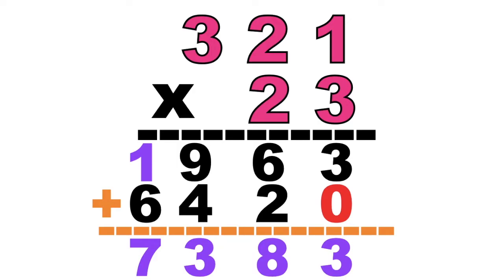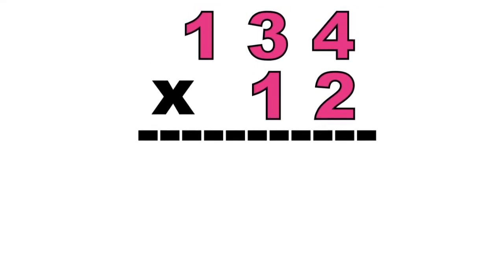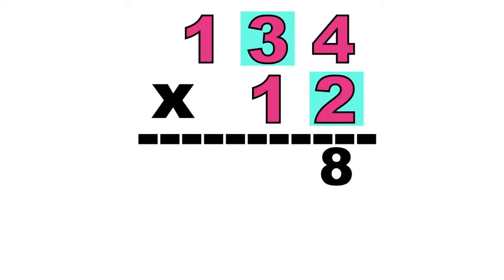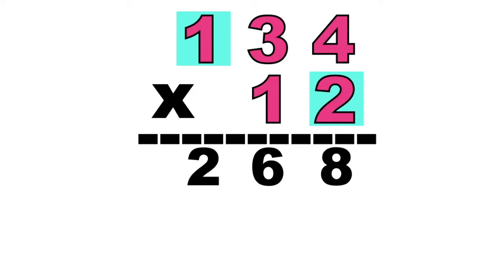Let's proceed to the next number. So let's multiply digit 2 on each digit at the first factor. 2 times 4 equals? Good job, children. It's 8. How about 2 times 3? That is 6. How about 2 times 1? Fantastic! It's 2. So let's proceed to the second digit at the second factor. Don't forget to put an imaginary 0.